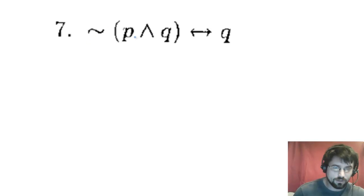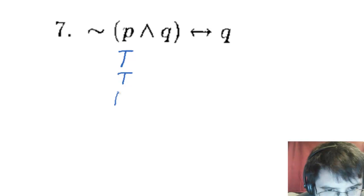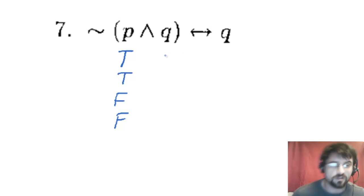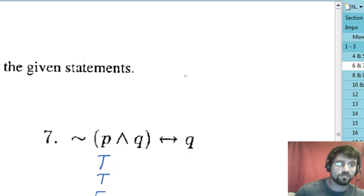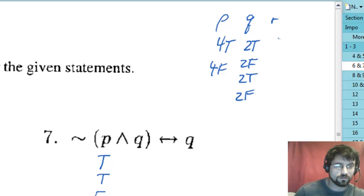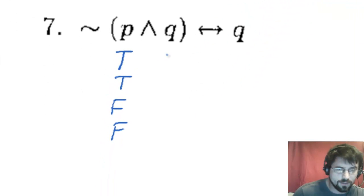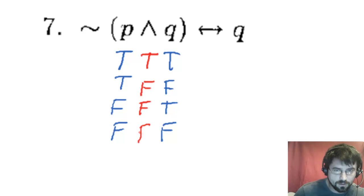Over here we have a negation of a conjunction if and only if that. First thing I'm going to fill in is my P. Again, there's two variables here. If it was three variables we would have eight lines, but because it's two we have four lines. The pattern would be we'd do four trues and four falses, then we'd do two trues, two falses, two trues, two falses, and then true false alternating. Over here we'd do true false, true false, and then we're going to do the and. And is only true when both are true, so that's at the top and nowhere else. Then I have to negate that in the parentheses. So negating, I get false, true, true, true.